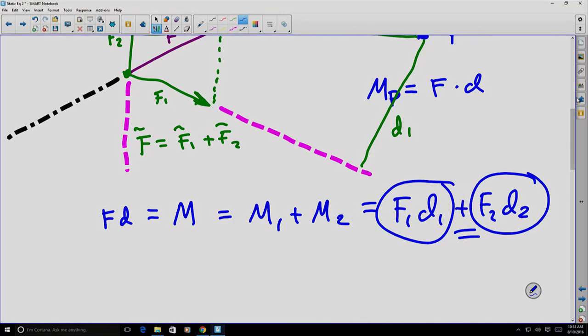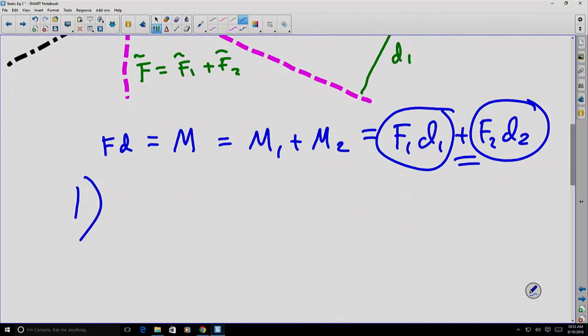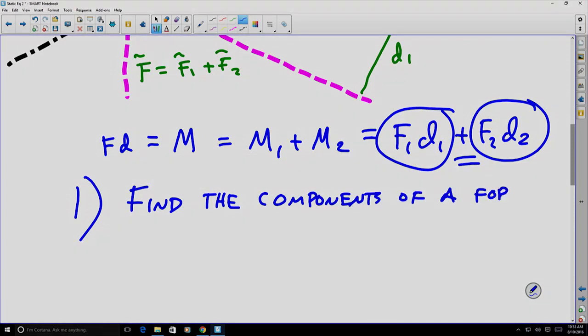There are two ways we can take advantage of this. Our first way is we can find the components of a force in some basis. For example, we might say FX and FY in a Cartesian basis. And we can break down and find the moment by using each of those components.